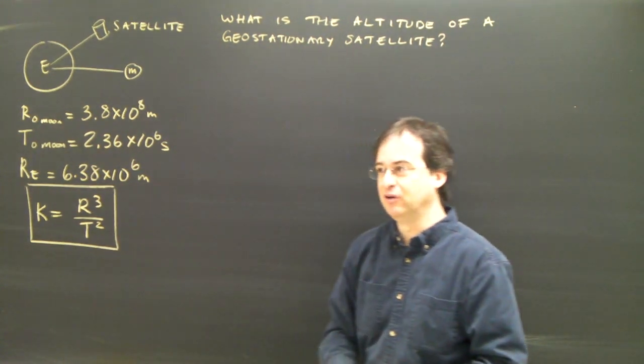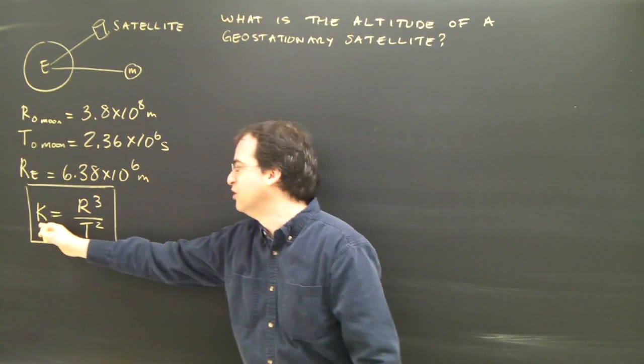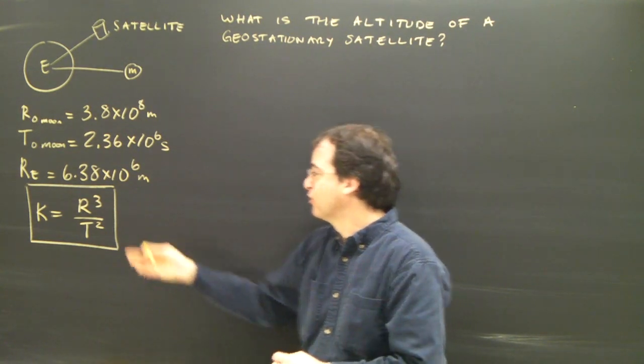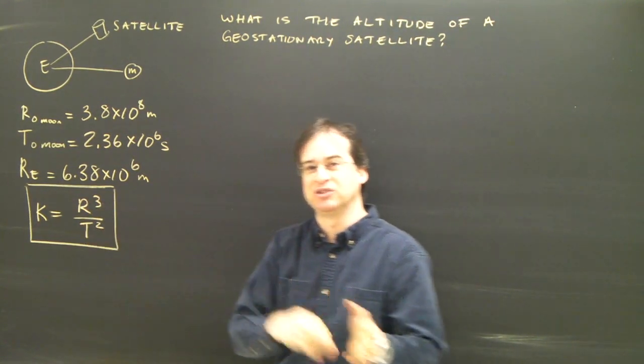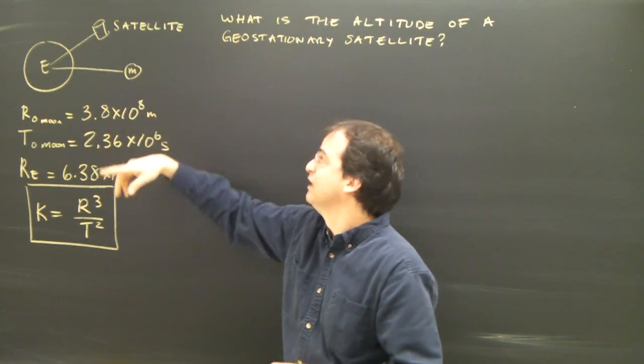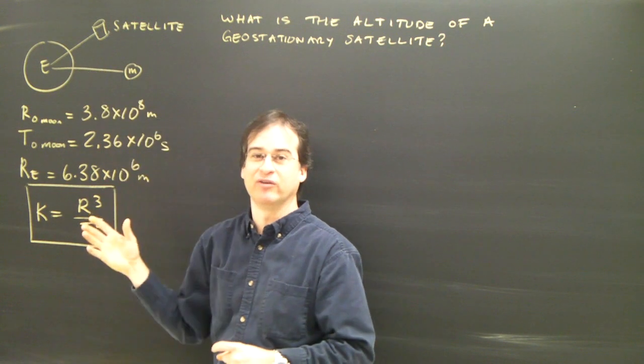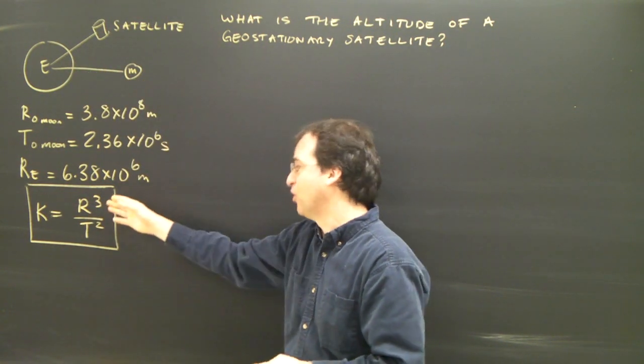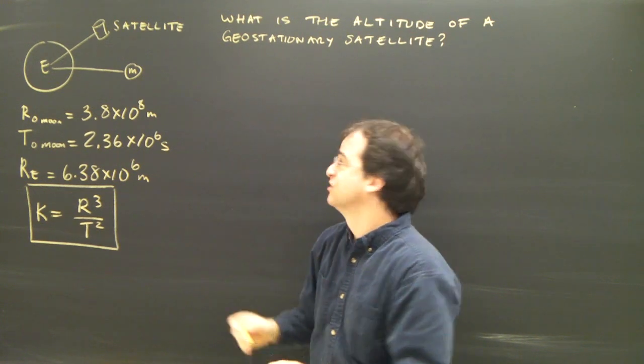So we look at Kepler's third law, and I don't have the constant for objects going around the Earth. But I know every object going around the Earth has that same constant, so I can compare one object to another. I can say, let's look at the moon. It's going around the Earth. And let's look at the satellite. It's going around the Earth. So r cubed over t squared for the moon should be equal to r cubed over t squared for the satellite. So that's what we're going to do.